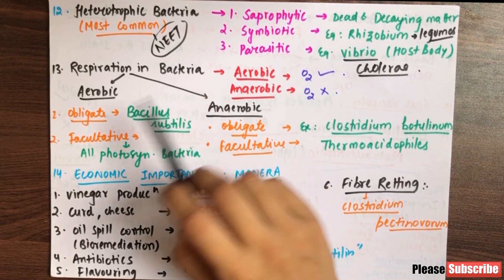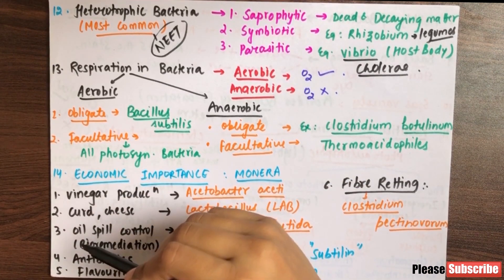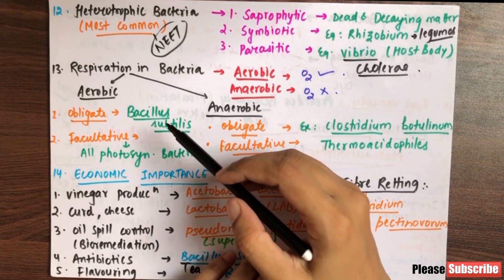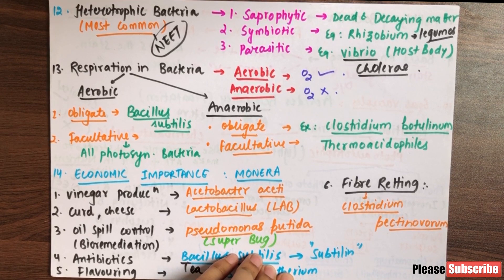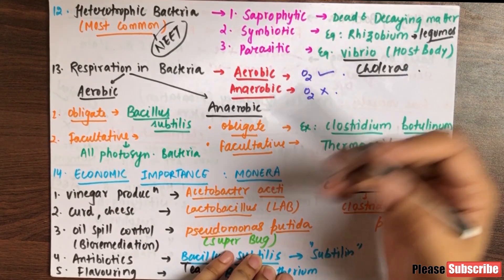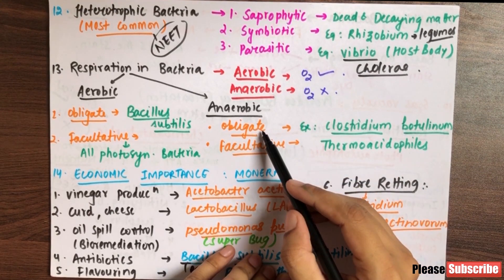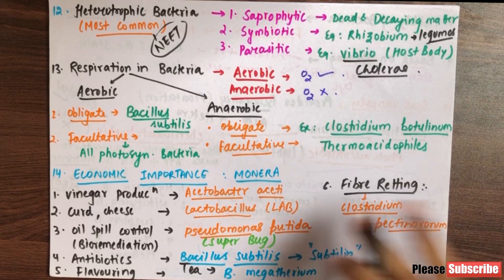Respiration in bacteria is of two types: aerobic and anaerobic. Aerobic bacteria use oxygen; anaerobic do not use oxygen. Aerobic bacteria have two categories: obligate aerobes, which strictly need oxygen and cannot survive without O2 (e.g., Bacillus subtilis), and facultative aerobes, which normally live in aerobic conditions but can switch to anaerobic conditions when needed. Similarly, anaerobic bacteria have obligate anaerobes, which can survive only in the complete absence of O2, and facultative anaerobes, which can switch to aerobic conditions when oxygen is available.